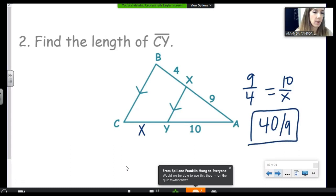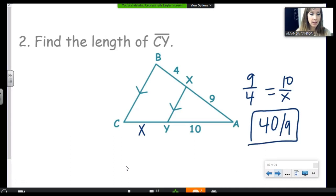Franklin, you won't need this theorem on the quiz tomorrow. The quiz is only over similar triangles. So AA similarity, side angle side similarity, and side side side similarity. So when you put 40 ninths in your calculator, you get 4.4 repeating. You're not allowed to write that as an answer on a quiz or a test or an assessment. So make sure you put 40 ninths.